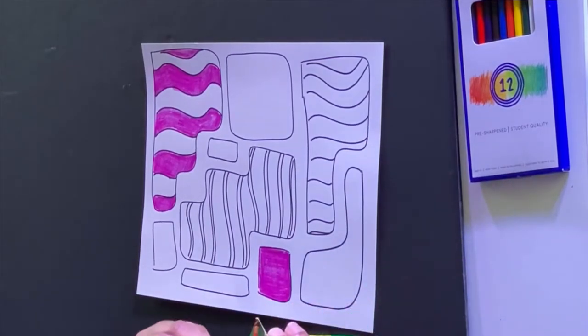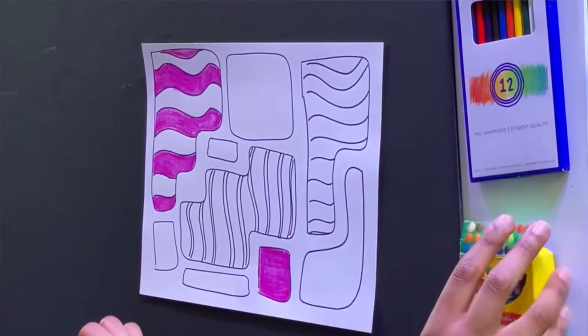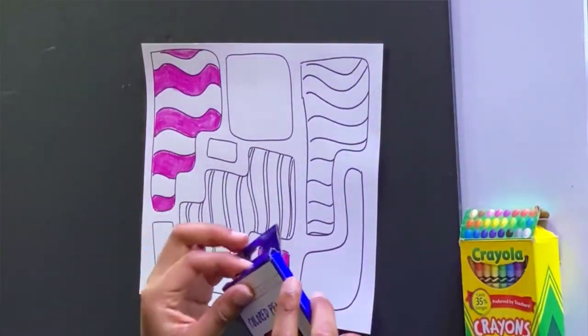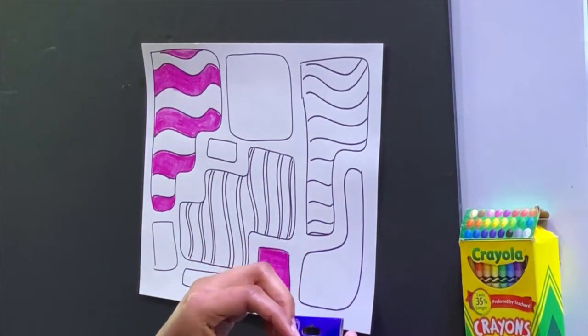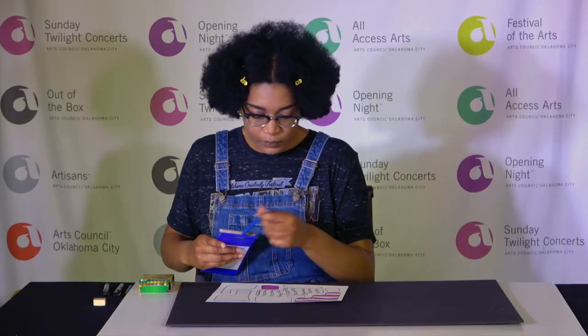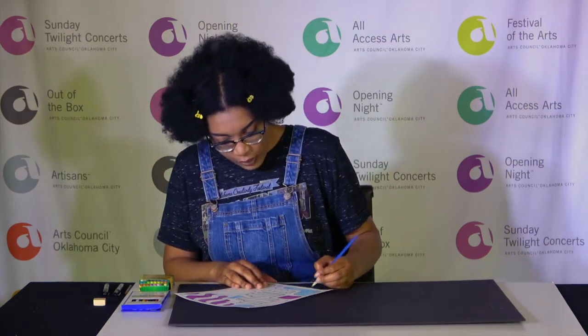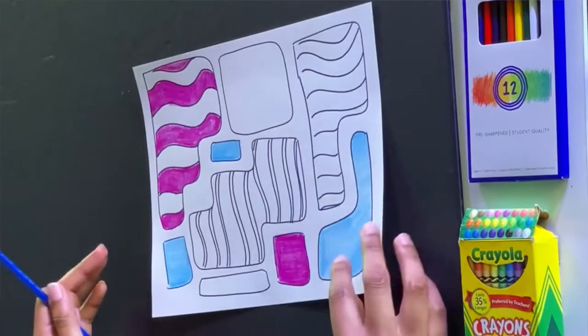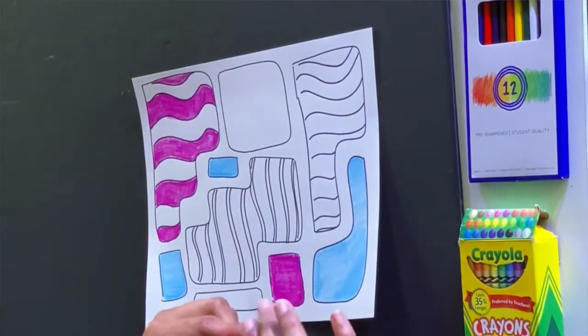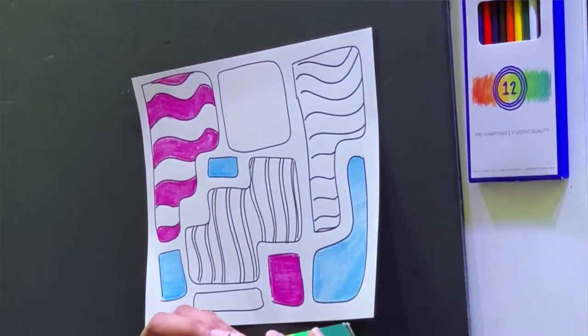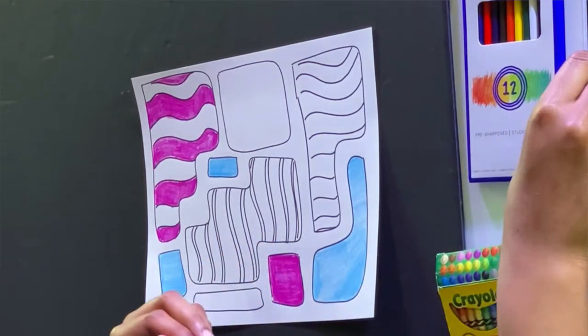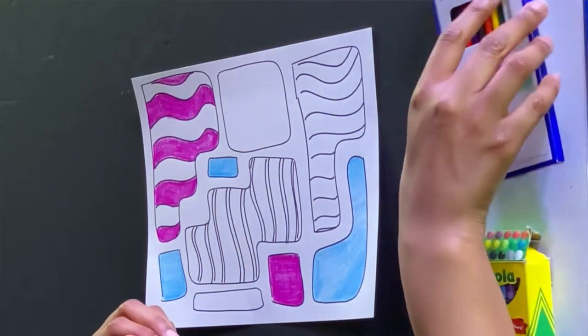I'm going to move on to another color. I think I'm going to use blue. Maybe a blue colored pencil. There's that blue. I think that's all of that I'm going to use for now. I might come back to it. I'm going to start leaving my colors out though. So I know what colors I've used. If I need to go back to another color.